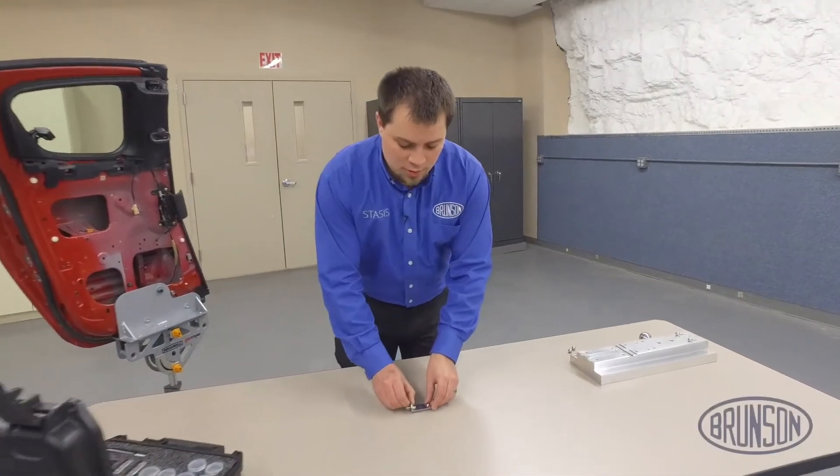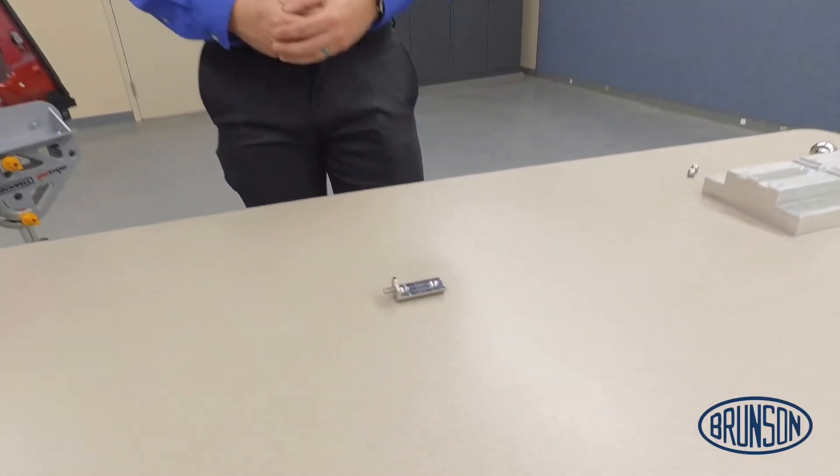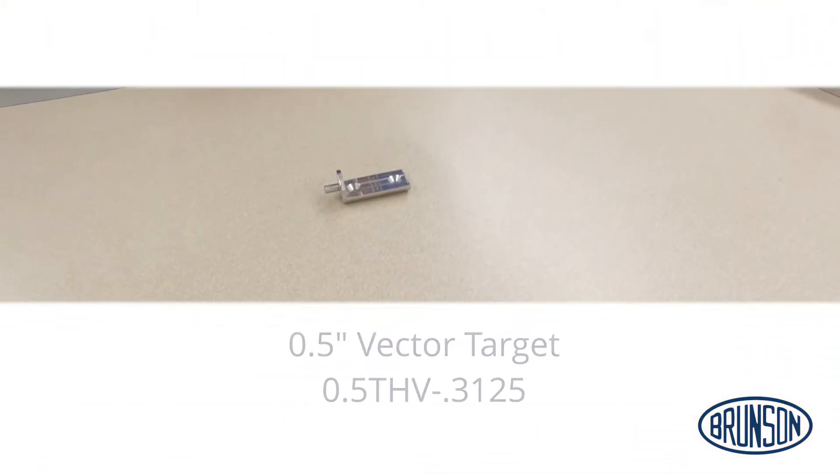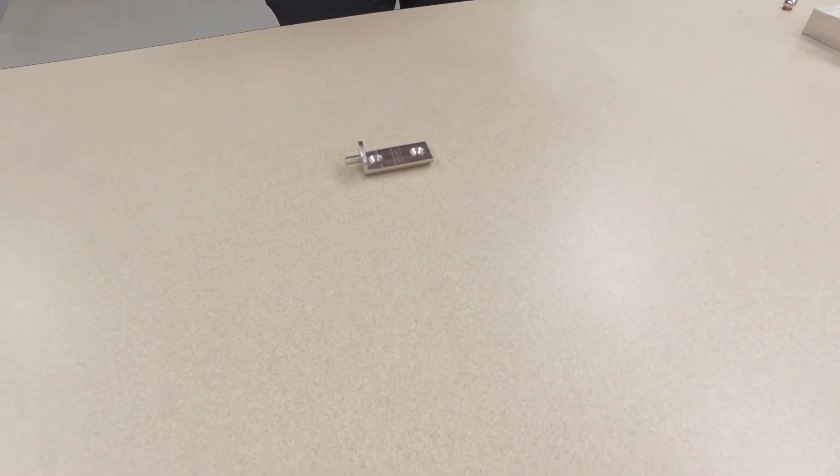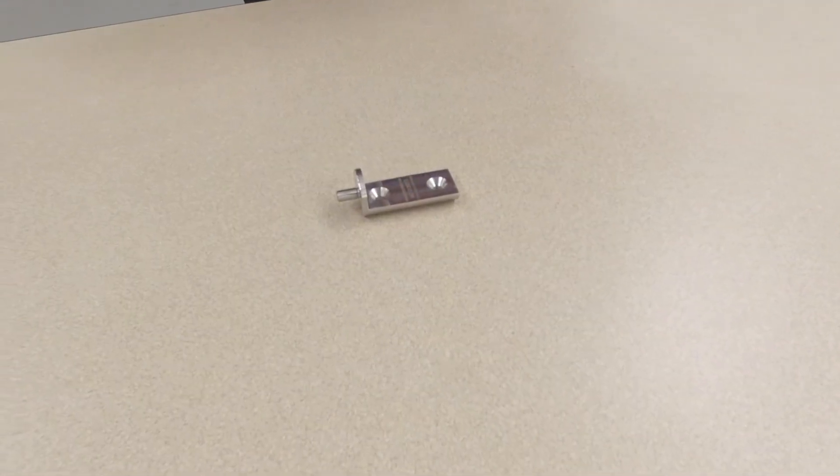This is the half-inch vector target. This particular target has a shank diameter of six millimeters, though various shank diameters are available.